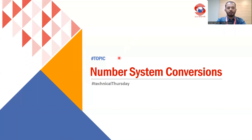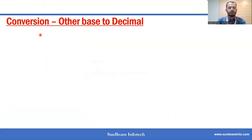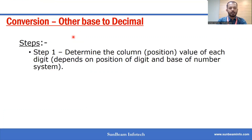Hello friends. In this video we are going to see number system conversion — specifically conversion of other bases to decimal number system. There are mainly three steps in this conversion. The first step is to determine the positional value of each digit, which depends on the position of the digit and the base of the number system.